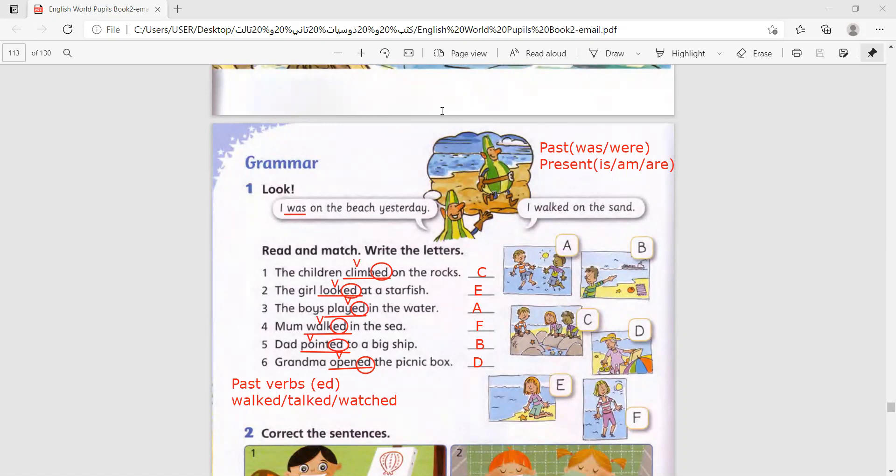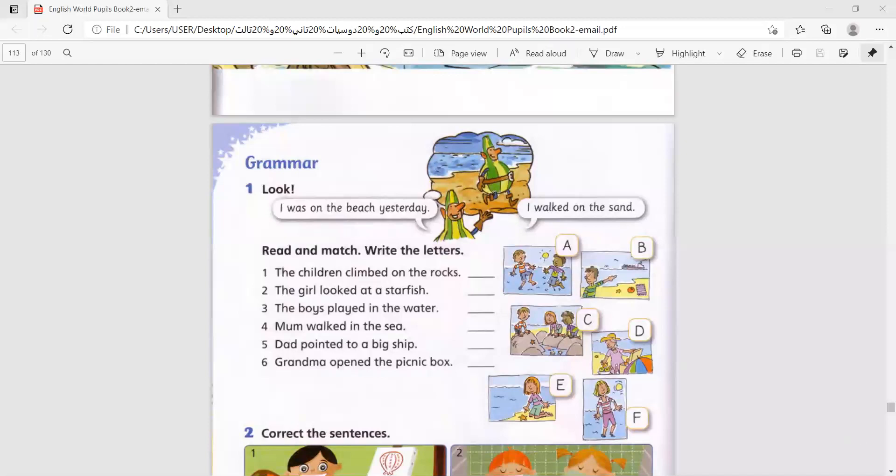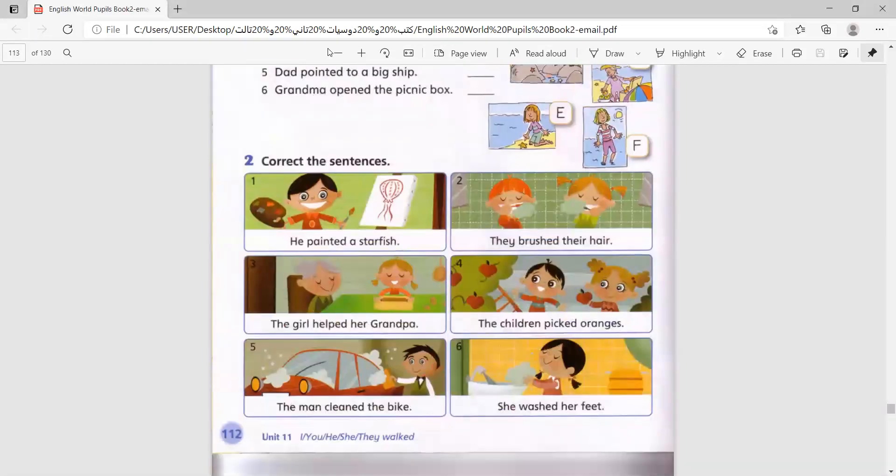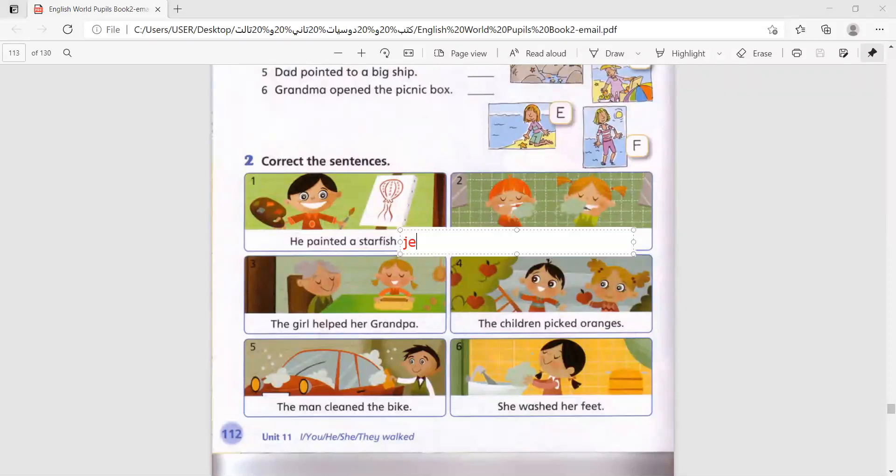Now, let's move on to correct the sentences. Very simple. He painted a starfish. No, this is a jellyfish.